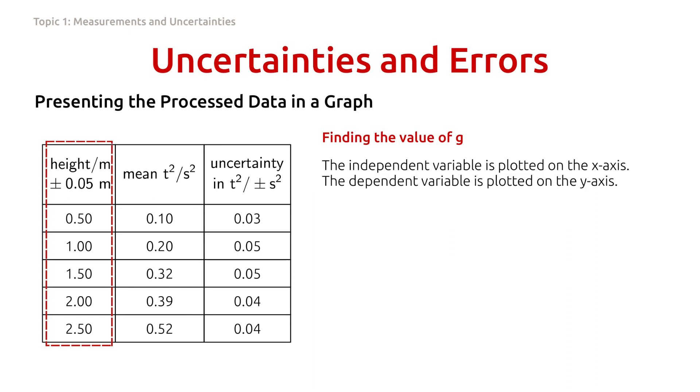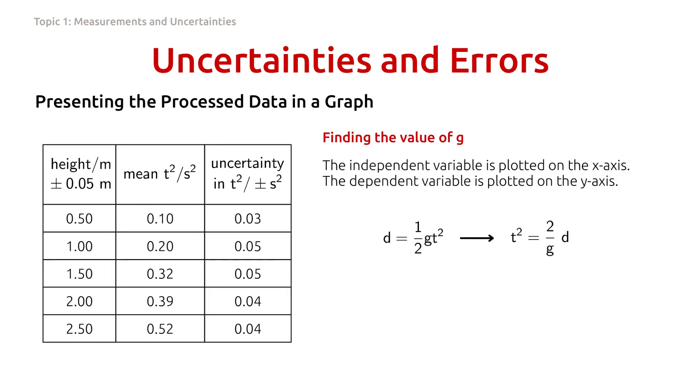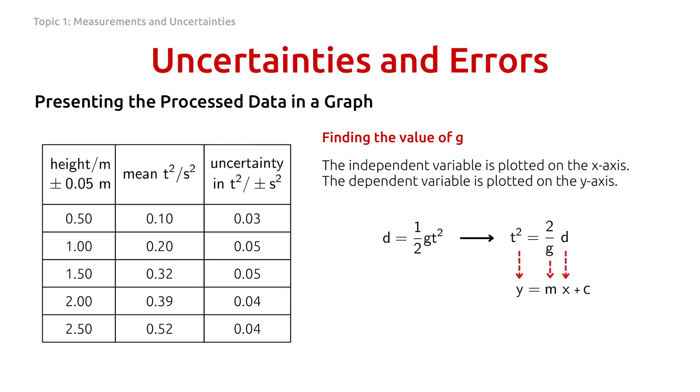In a graph, the independent variable is plotted on the x-axis, and the dependent variable, which in this case the processed value of mean t squared is plotted on the y-axis. For that reason, we rearrange this equation so that the dependent variable becomes the subject of the equation. The equation is then compared to the equation of the line, y equals mx plus c.